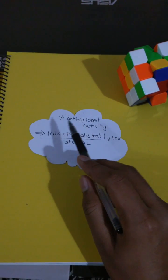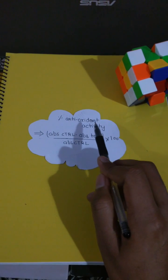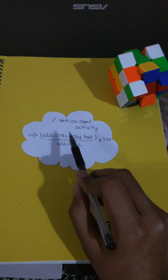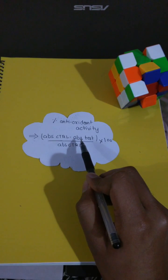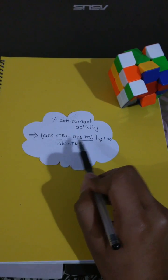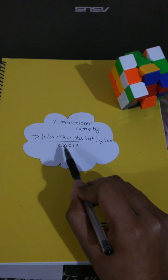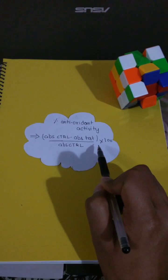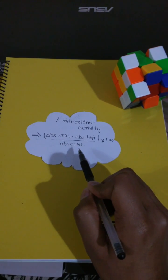Finally guys, I'm going to tell you how to calculate the percentage antioxidant activity of your plant extract. Take OD of your control minus it from the OD of your respective plant concentration, and divide it by OD of your control into 100. This is the final step of this DPPH assay.